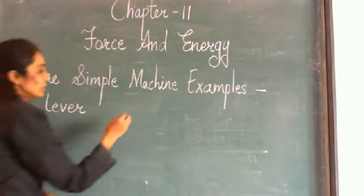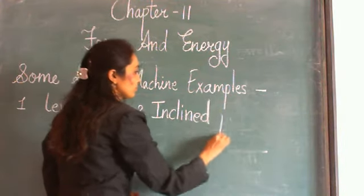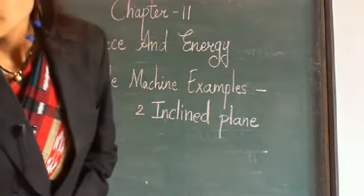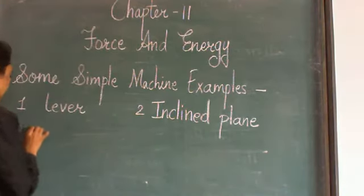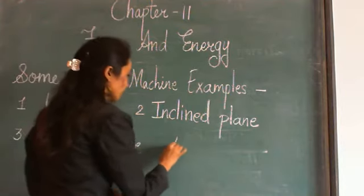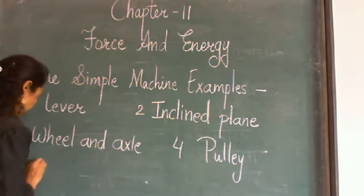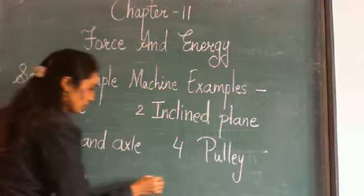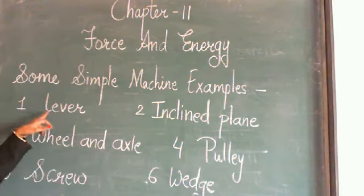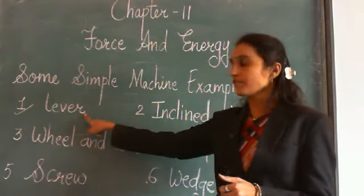The six simple machines are: lever, inclined plane, wheel and axle, pulley, screw, and wedge. In the previous lectures we have talked about lever.